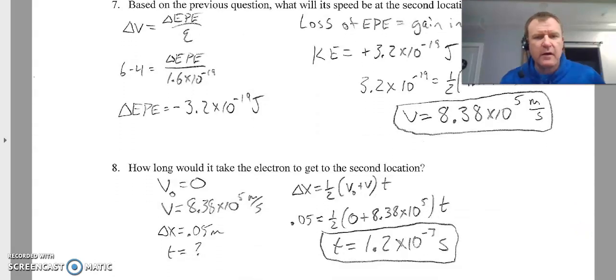Last question. How long would it take? We're looking for time. Time's involved. You have to use kinematics somehow. So we start from rest. Our final velocity is what we just solved for. We're going to move that 5 centimeters. Make sure you're in meters. We want to know time. I found the proper kinematic equation. Plugged the stuff in. Got my time there.